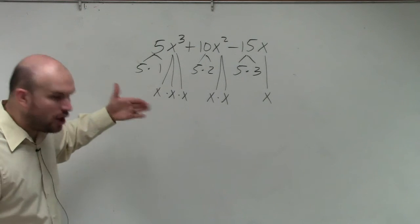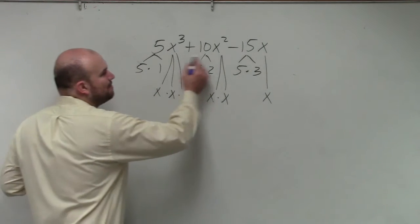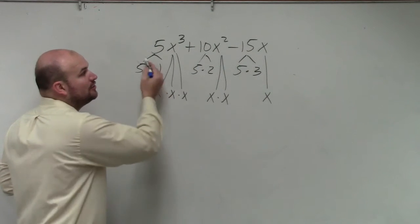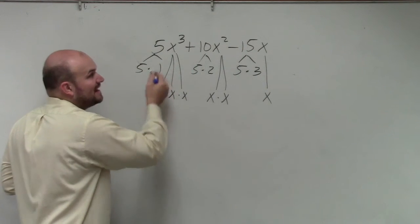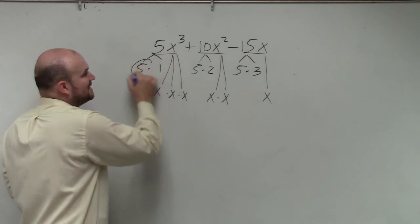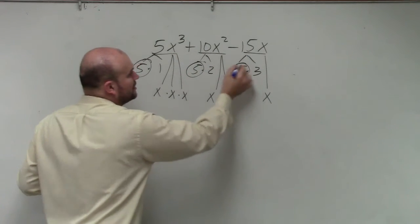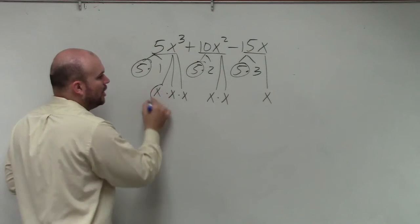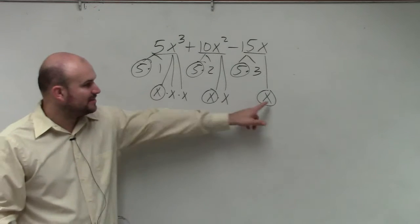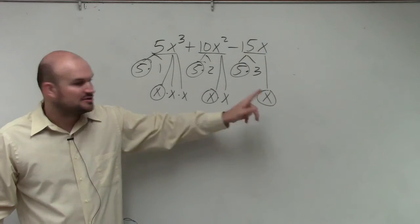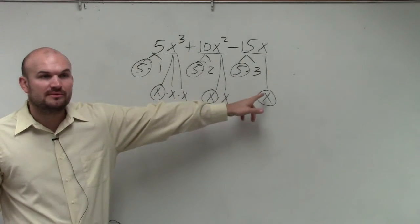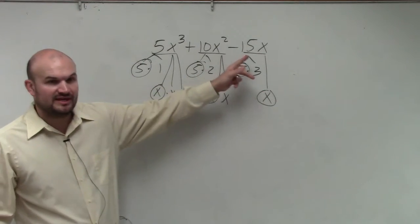But in reality, all we're simply doing is we are basically dividing out what we call the greatest common factor, the largest number and variable that evenly divides into all of those. So what you guys can see is all of these terms share a 5, and they all share an x. You can't say they all share an x squared because this one only has x, right? So that's the largest x to the power that divides into all of them. And 5 is the largest number that divides into all three of these.